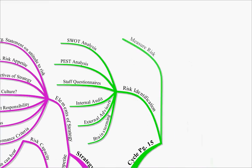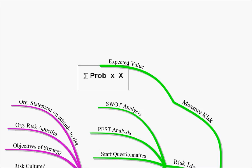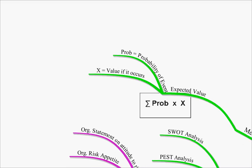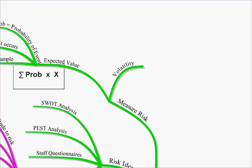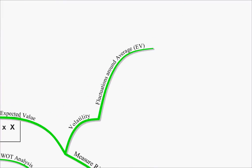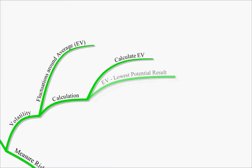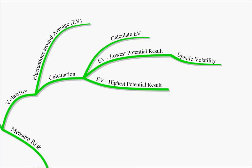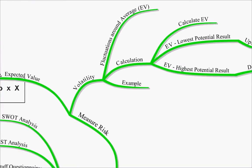Once you've identified your risks, you're then going to measure your risks. You may use expected values — that's the probability of the event times the expected amount should that happen. Volatility is how much your returns fluctuate around an average. Your expected value less your lowest potential result is your upside volatility. Your expected value less your highest potential result is your downside volatility. An example is in the notes.